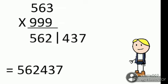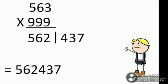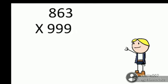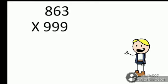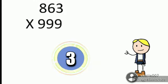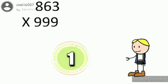I think it's understood for you. Now I will give you one sum. 863 multiplied by 999. 5 seconds starts for your calculations. This is the answer for the sum.